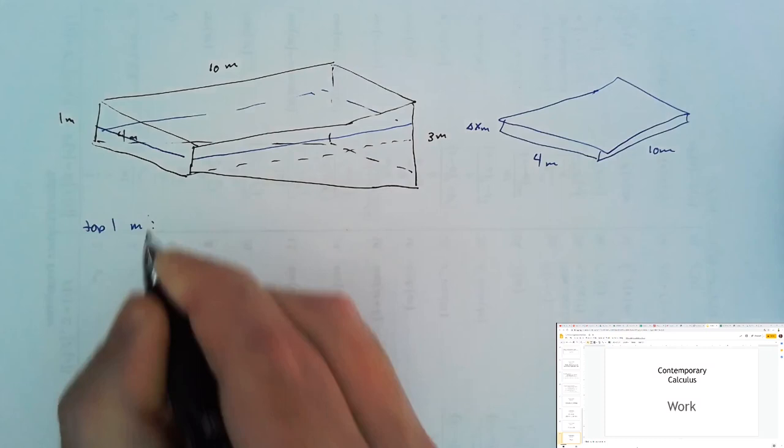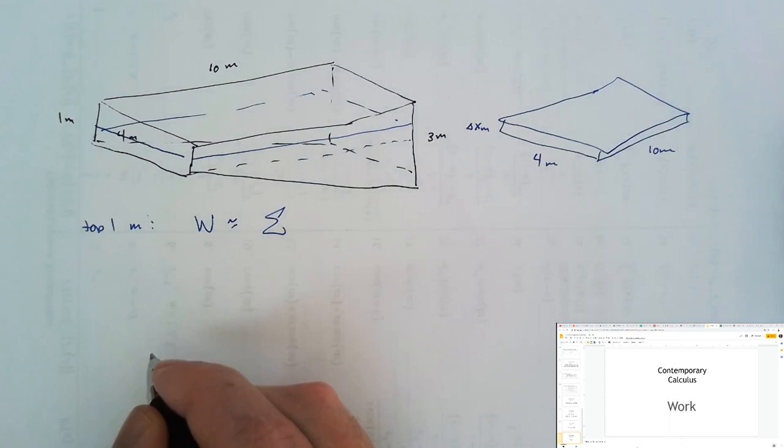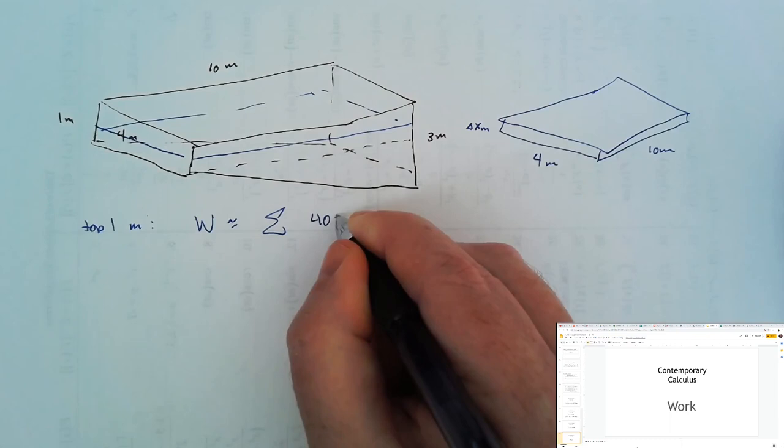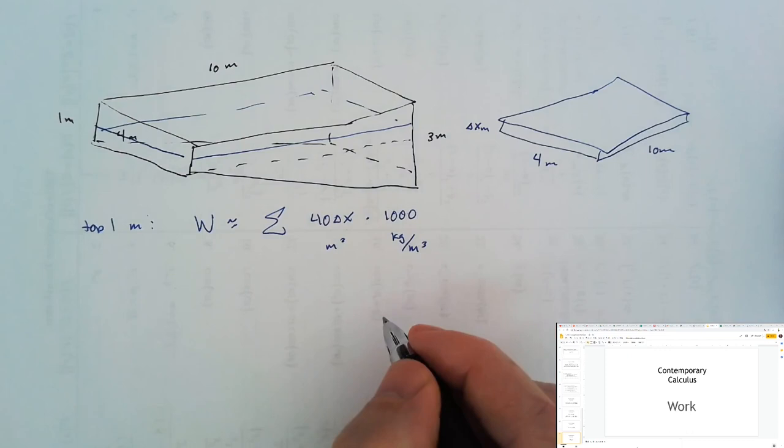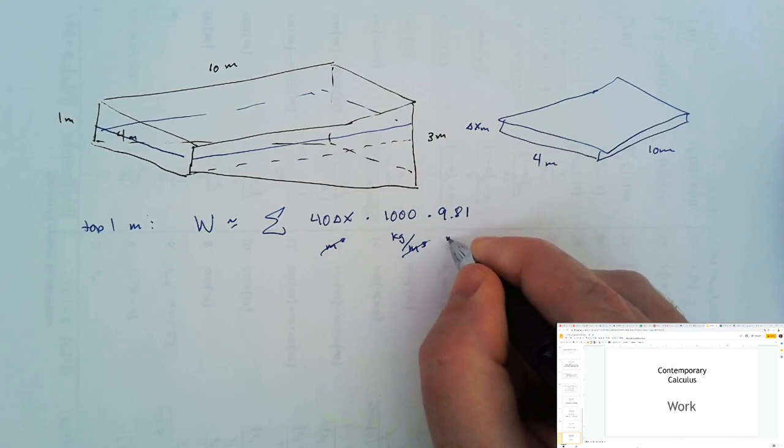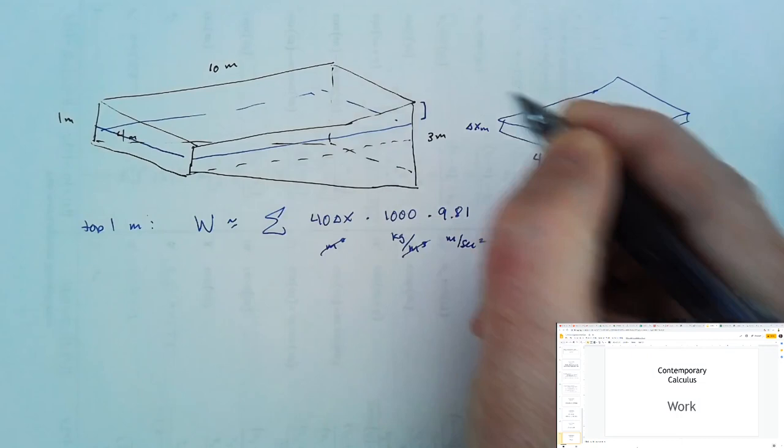4 meters wide, and 10 meters long. So for the top 1 meter of water in the pool, the work would be approximately the sum of the volume of this water, which would be 40 delta x cubic meters, times the density of water, which happens to be approximately 1,000 kilograms per cubic meter. So this gives us kilograms,